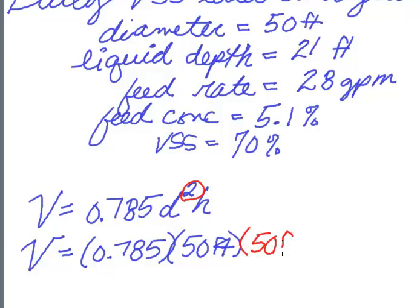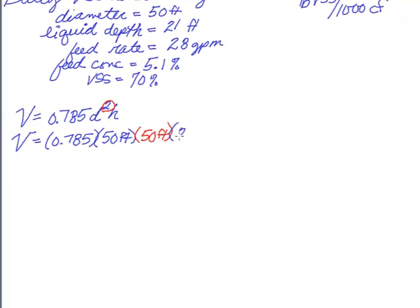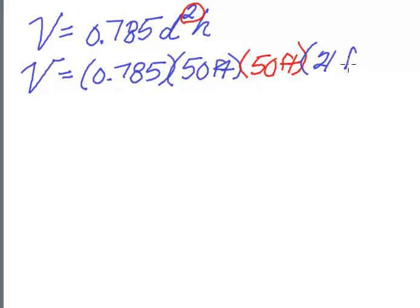What that means is that I don't need 50 feet once. I actually need it twice. So we're going to put it into the formula twice. And I need to know the height, or in this case, the liquid depth. So that's going to be 21 feet of liquid depth.